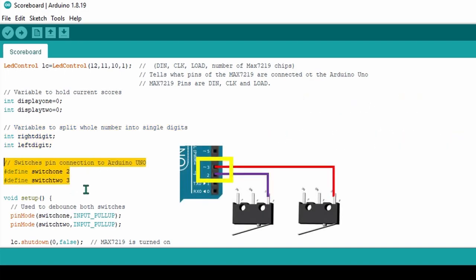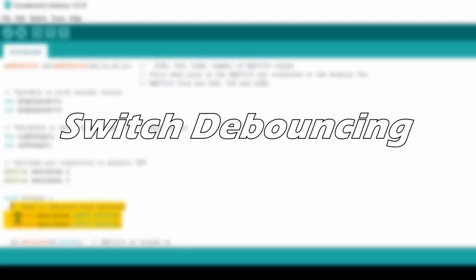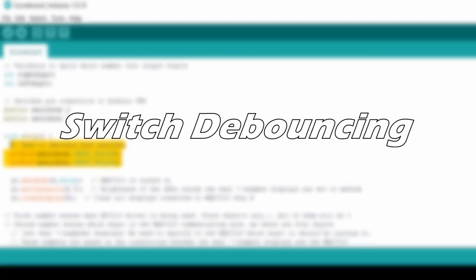Here, we define what pins of the switches are connected to the Arduino Uno. In this case, 2 and 3. Then we debounce the switches. What does debouncing mean?